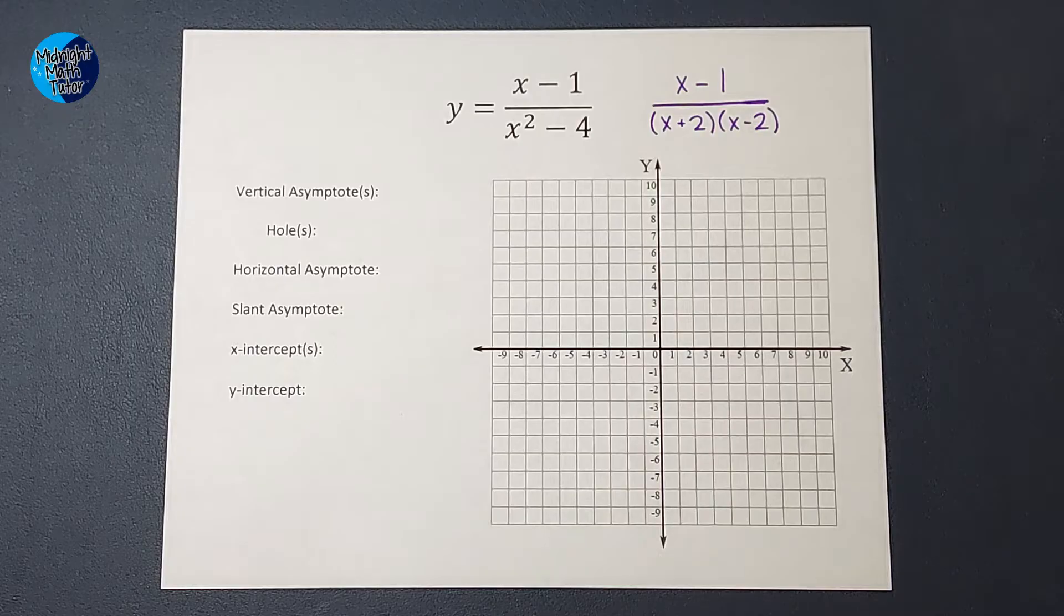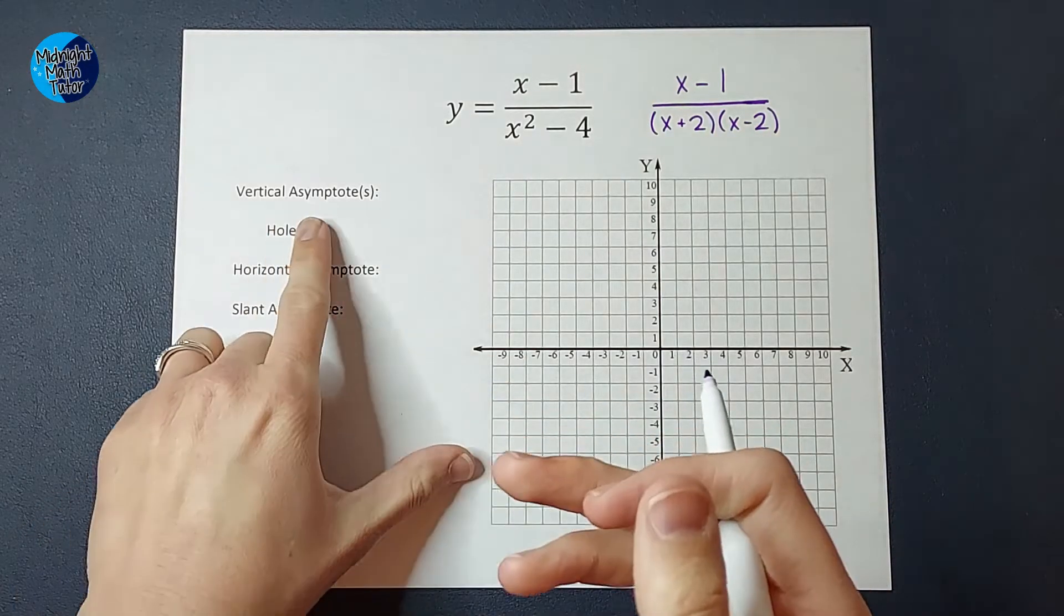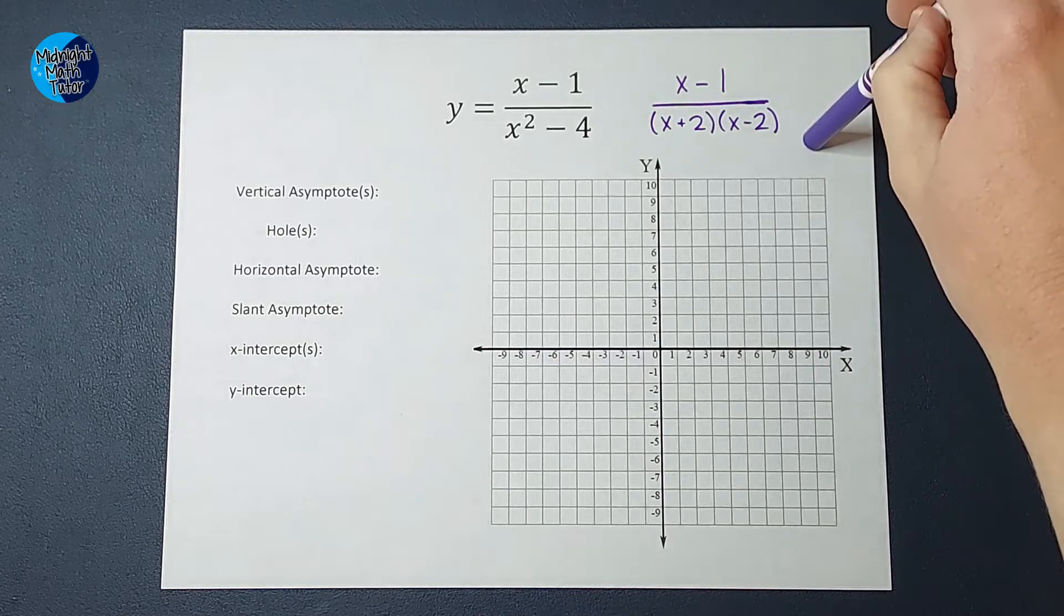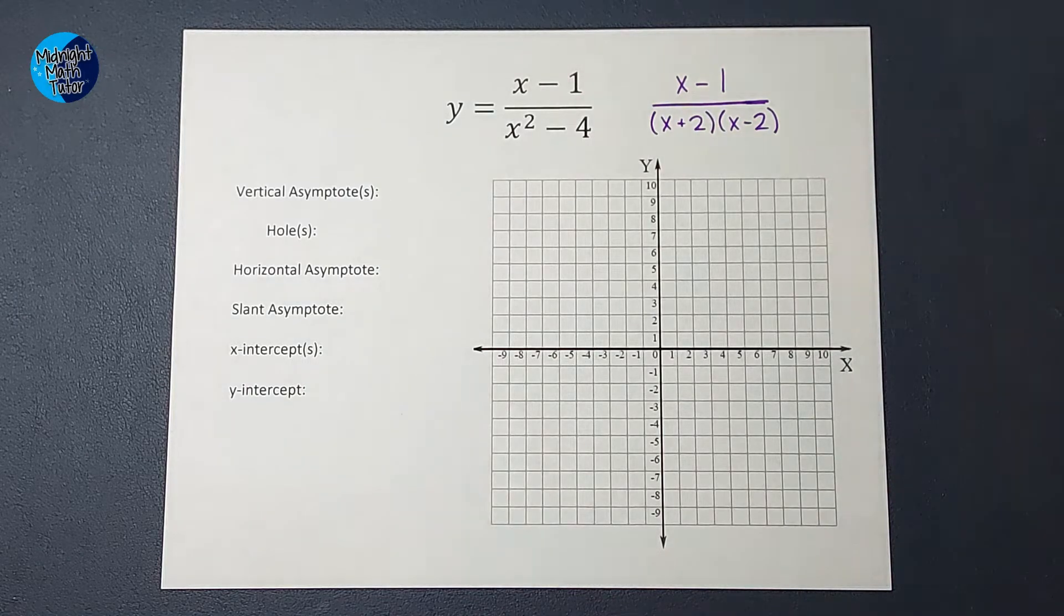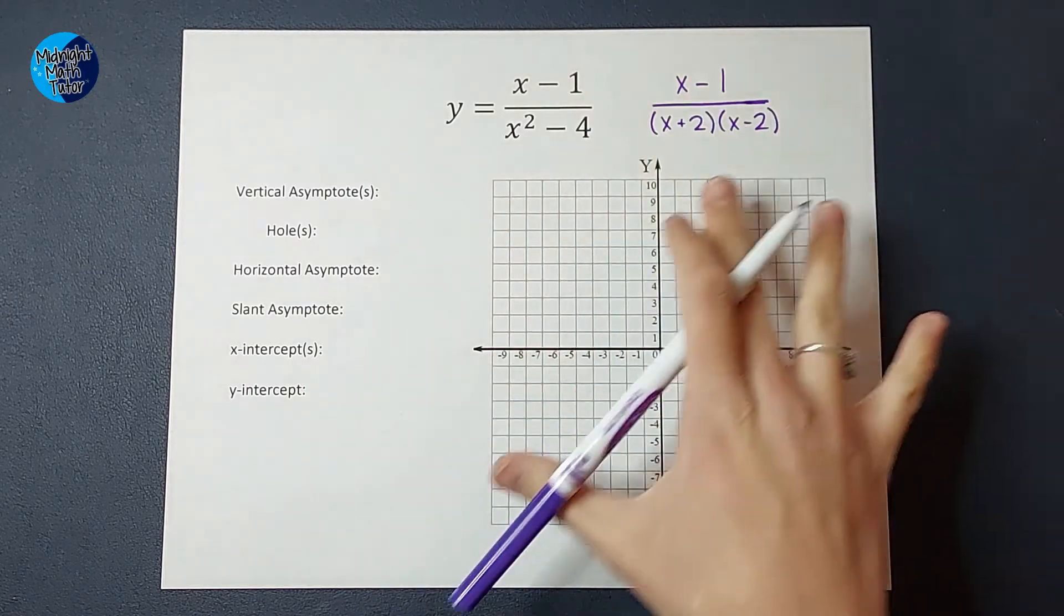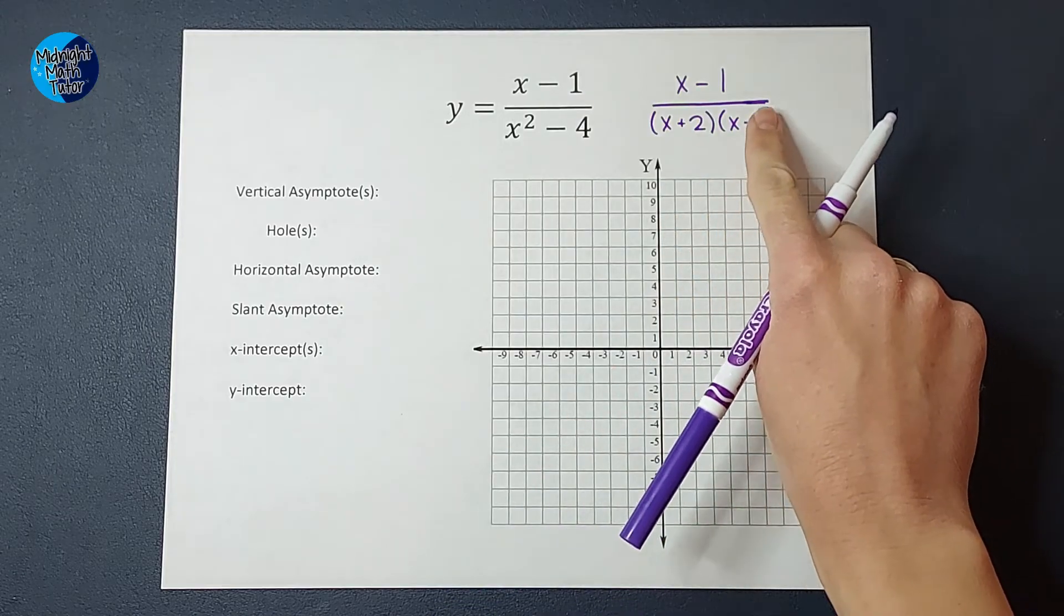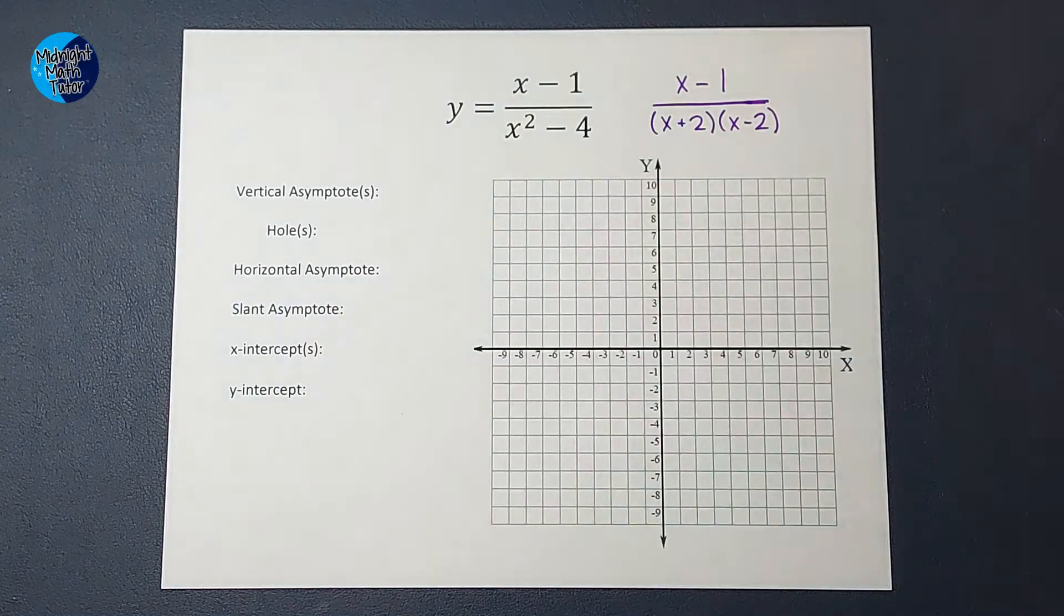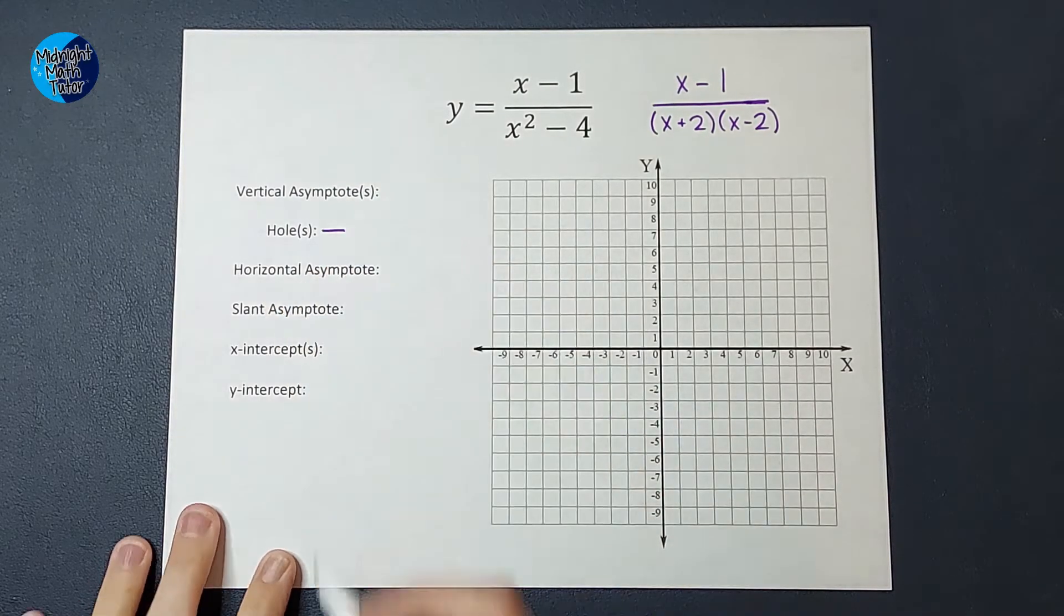All right, step two is our asymptotes. First, we're going to look... Well, actually, before I say that, really, we look for holes first. So a hole occurs when you have something in the top and the bottom that cancel. So pretend when I had factored these that this one had been x minus 1 and those had canceled. That would be when you have a hole in your graph. And I will link a video in the corner with an example of this. But for this example, we don't have any. We checked. There's none, right?